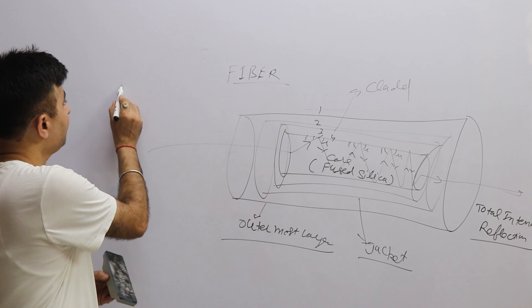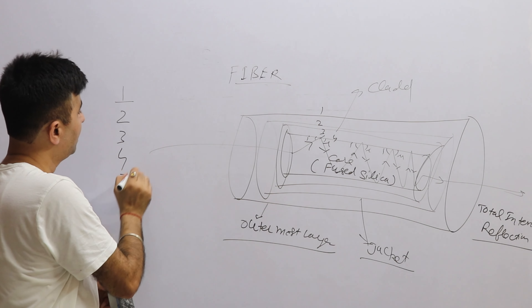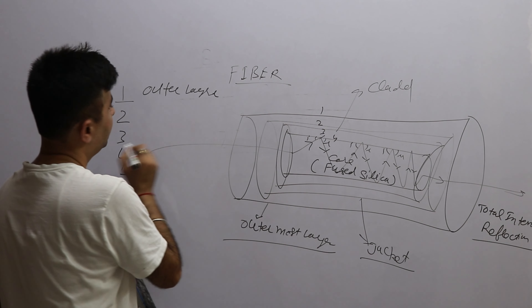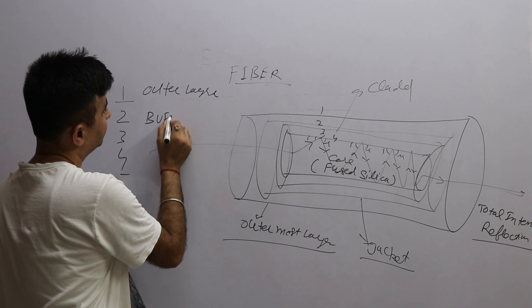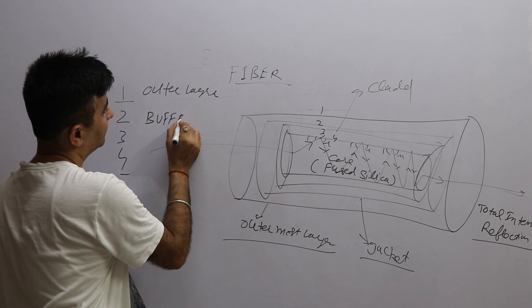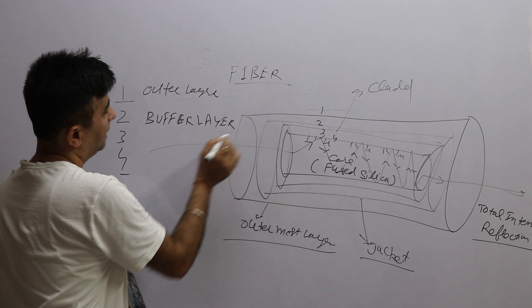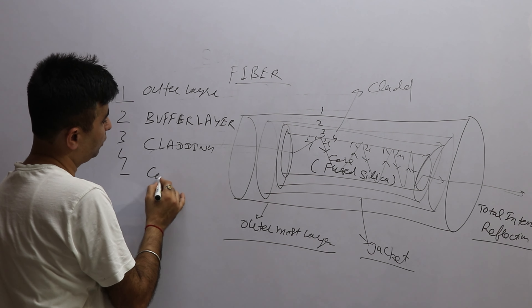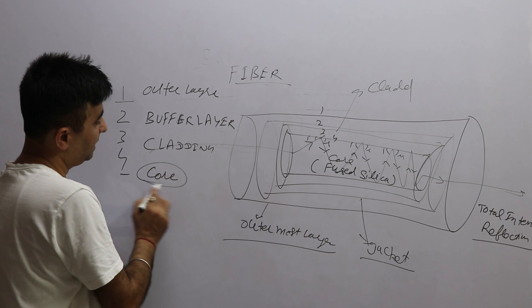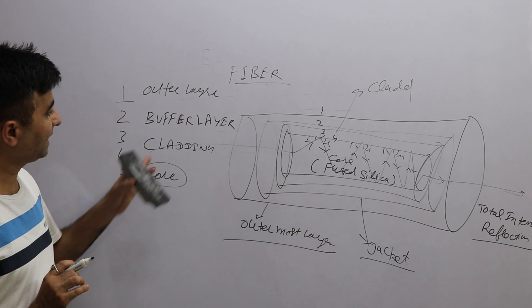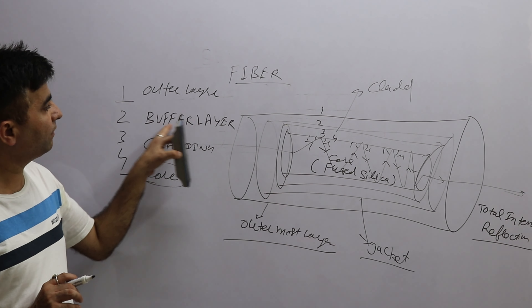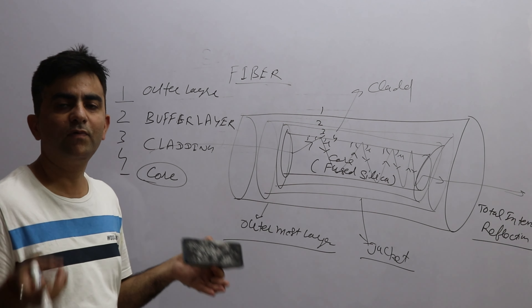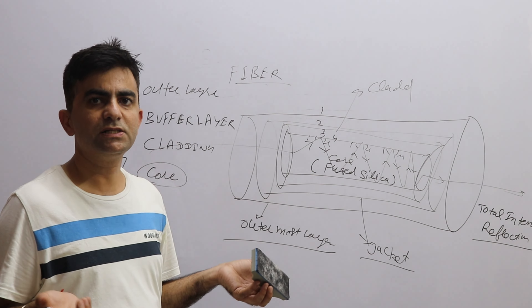Inside the fiber there are four fundamental layers. The first is the outermost layer — the outer jacket. The second is the buffer layer. The third is the cladding. The fourth is the core, which is the main layer used to carry the light. The cladding helps to keep the light inside the core. The buffer is a protecting layer, and the outermost jacket is a thick cover because fiber may be placed inside water, dust, or sand, so protection is needed.